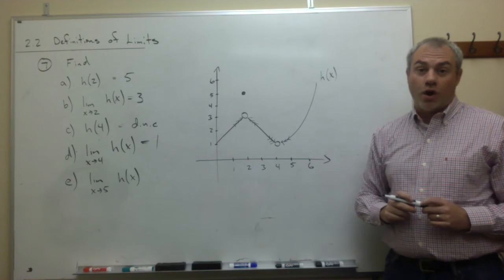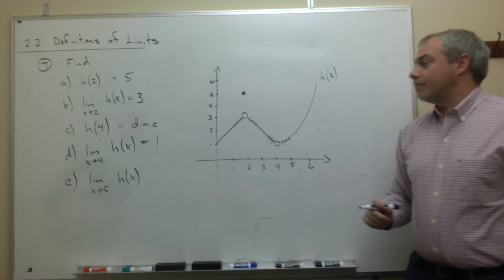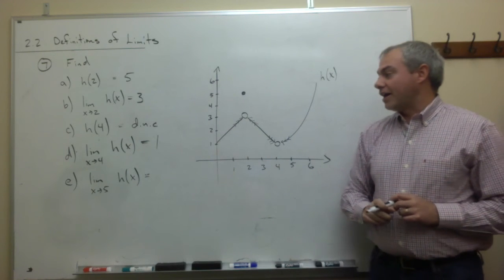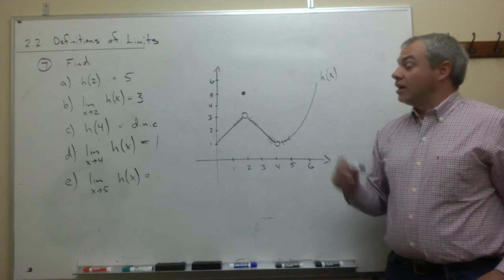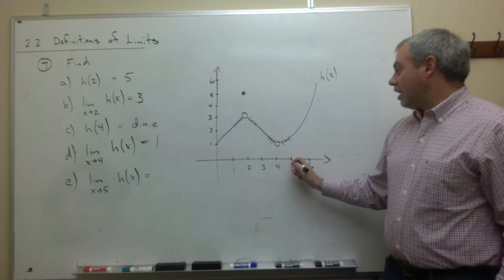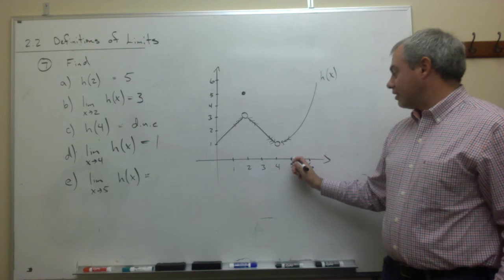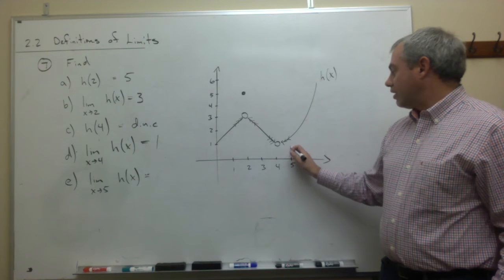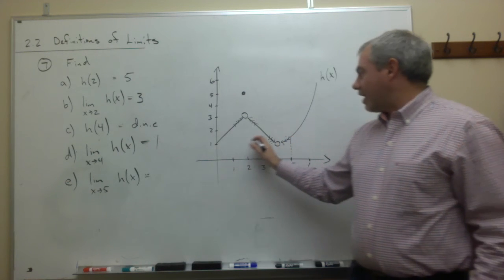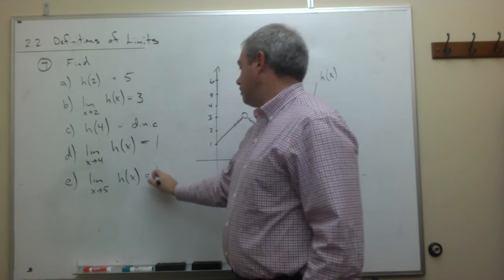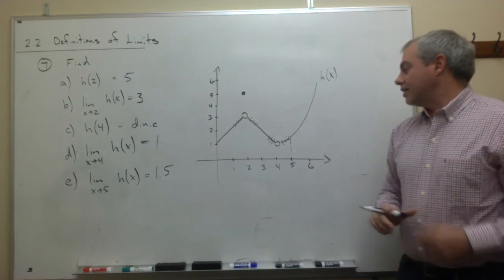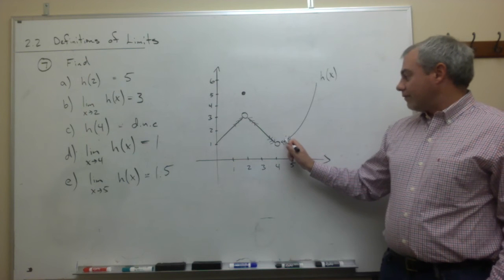Let's look at part e. Part e says what's the limit as x goes to 5 of this function. Again, now this is the limit, so we're saying as we get close to 5, what does this look like it's getting close to? So at 5, we're coming from the left, we're coming from the right. I don't know, on my graph it looks like about 1.5.